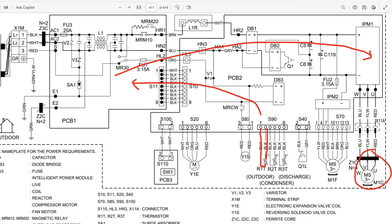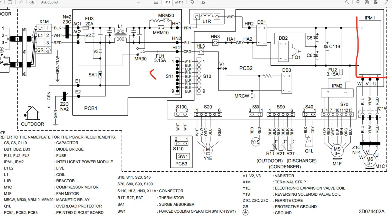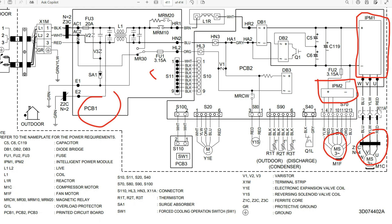At what capacity the compressor will run, the outdoor fan motor, the indoor fan motor, and so on. We have two intelligent power modules here — one dedicated solely for the compressor, and another dedicated to the outdoor fan motor. These power modules carry out the commands coming from the PCB to regulate the power supply into these motors so that we can run them at very specific capacities.